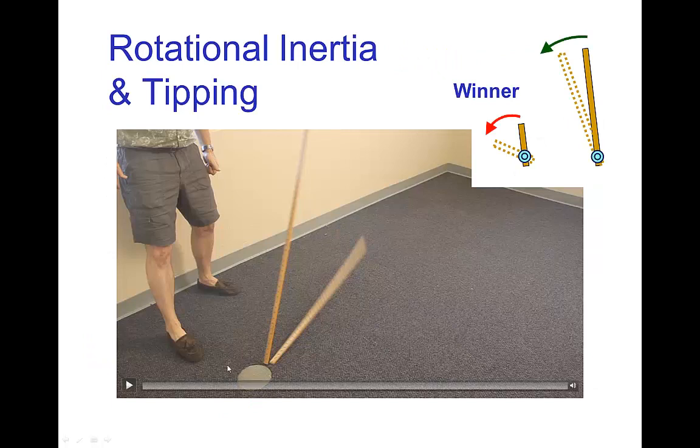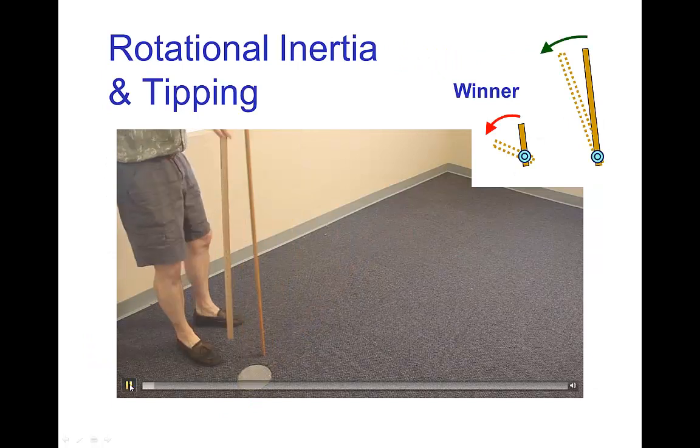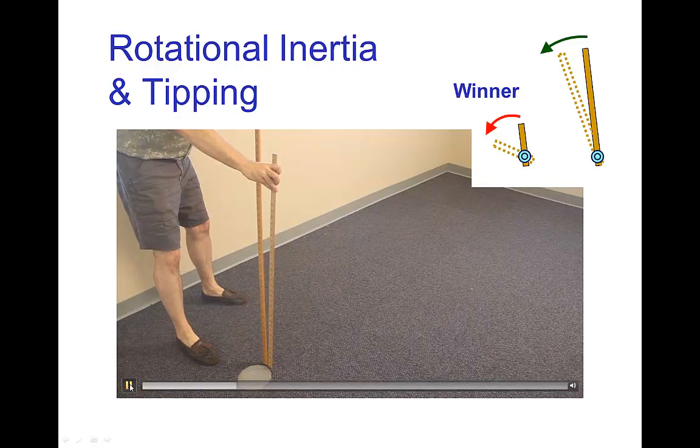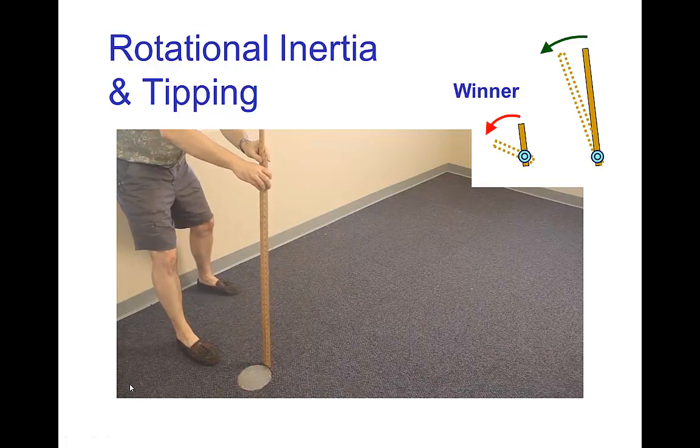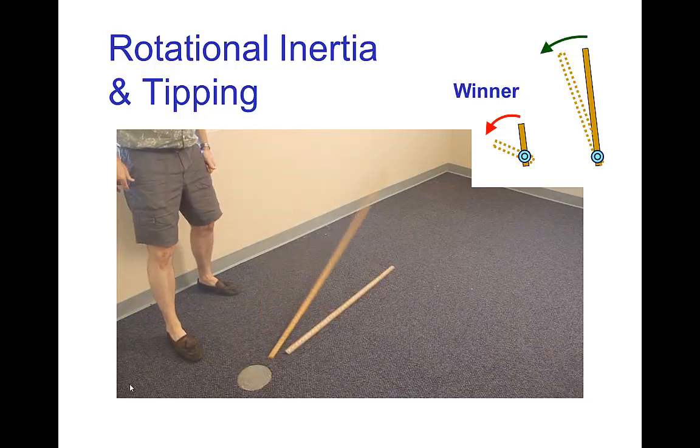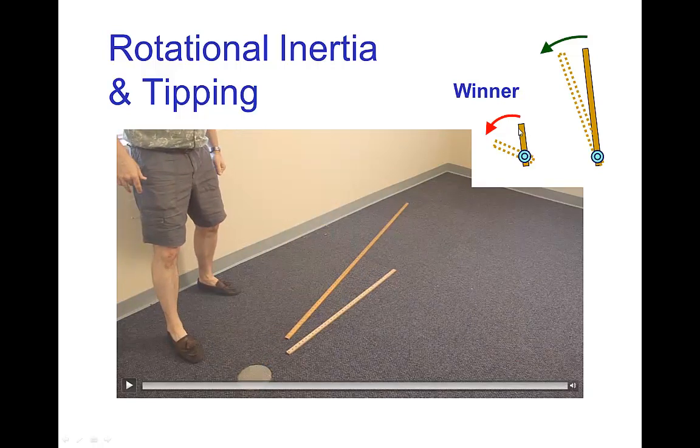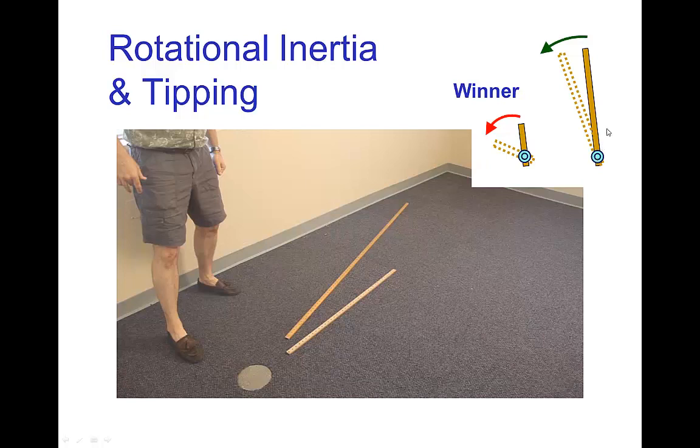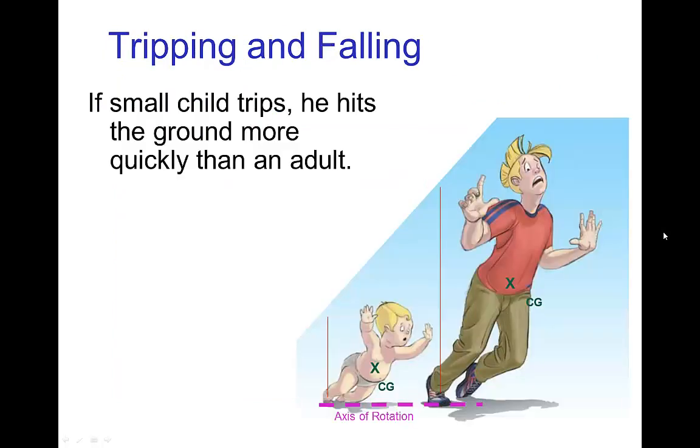We have the same thing with sticks of different lengths. Here I have a stick which is twice the length of the short one, and you'll see that the short one swings down and hits the ground sooner. In a sense, its center of gravity is closer to the ground than the long stick, and so it reaches the ground sooner.